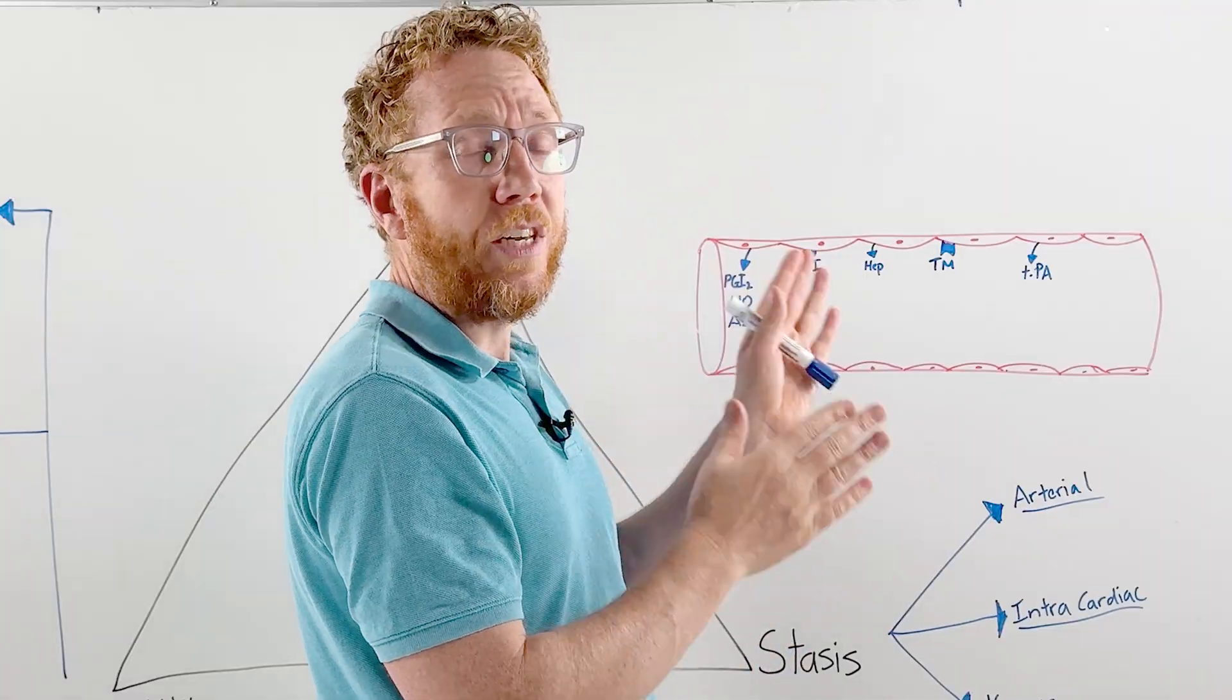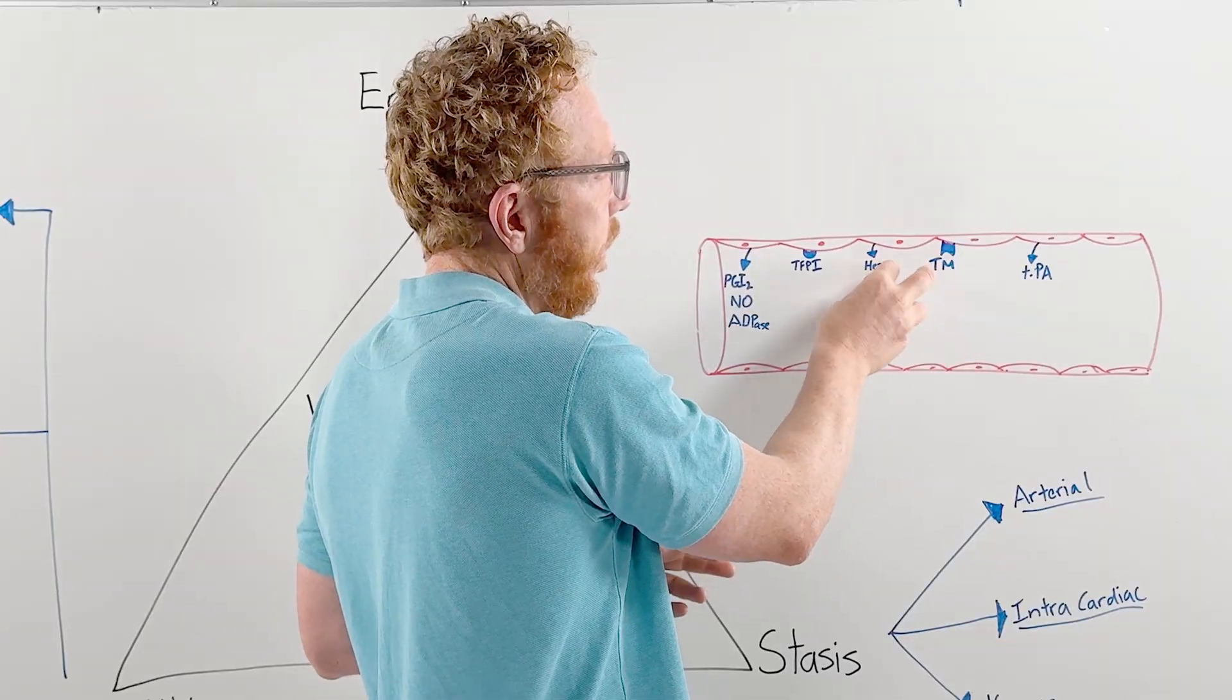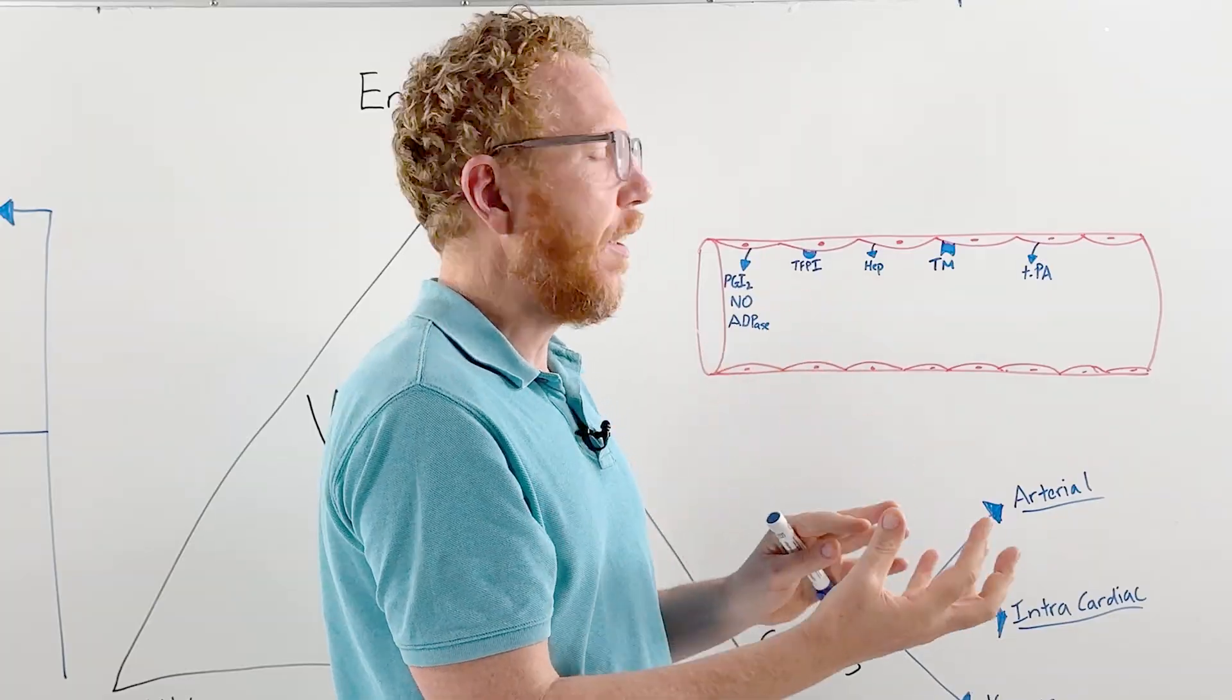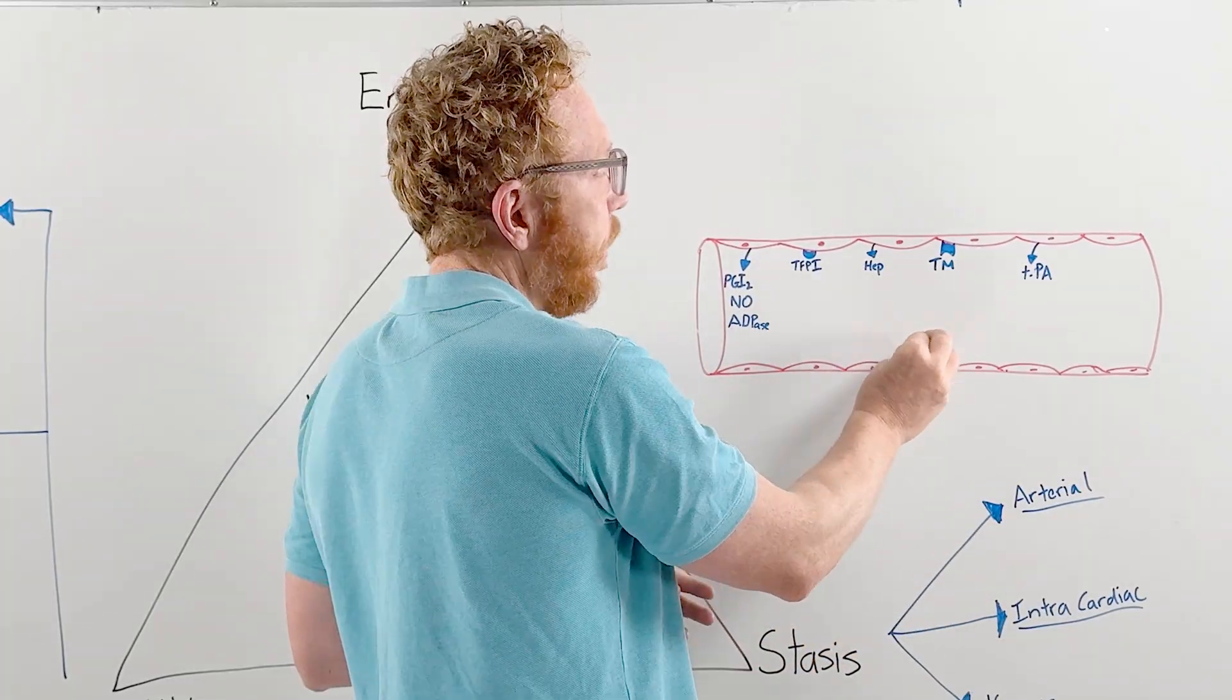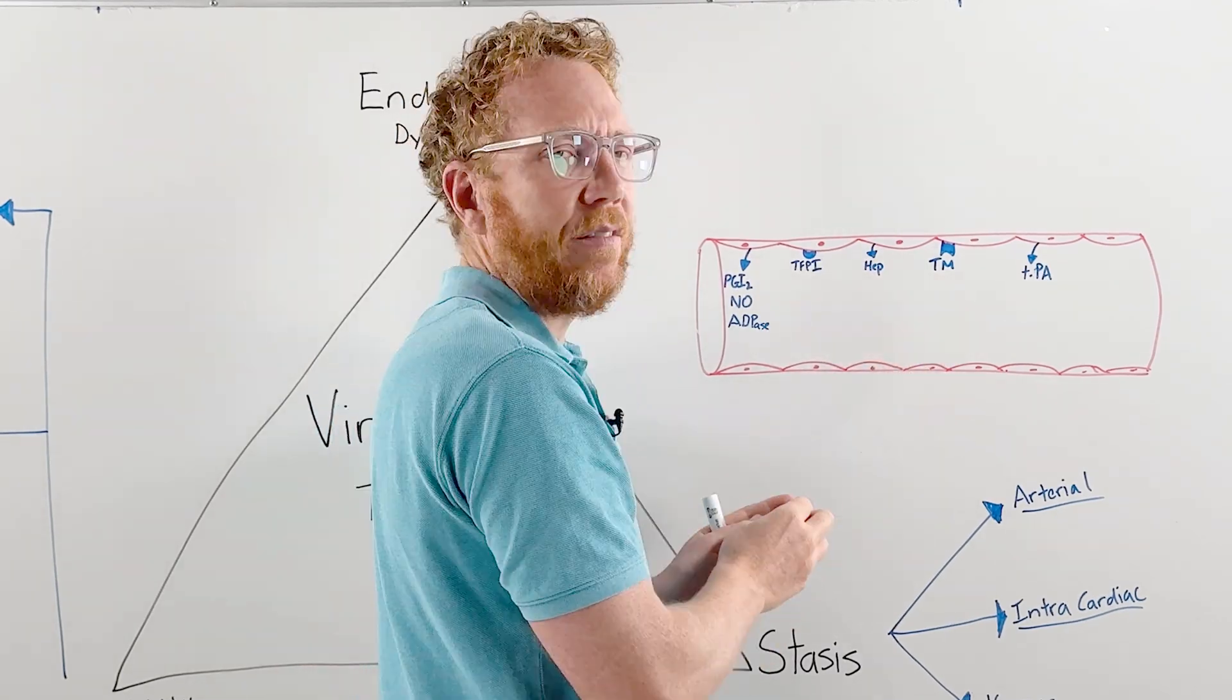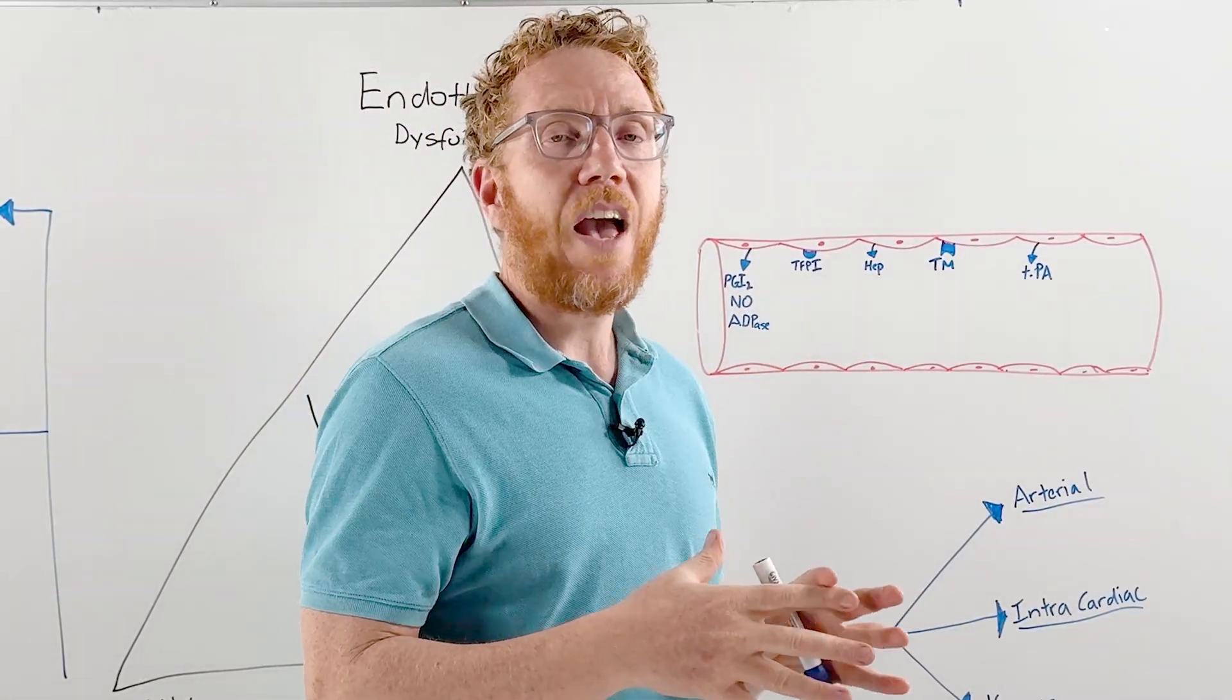The endothelium instructs coagulation factors to become activated through different pathways: intrinsic, extrinsic, and common pathway. These coagulation factors come together and activate the final step, which is fibrinogen into fibrin. That fibrin stabilizes the platelet plug, creating a clot. The clot blocks the breach in the blood vessel, allows it to heal, and prevents blood loss.